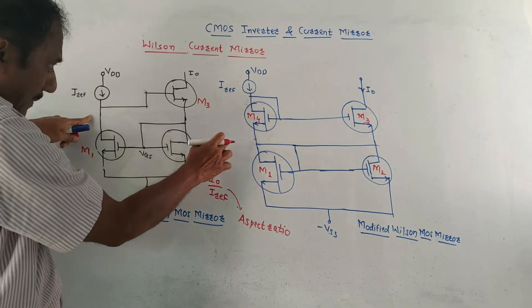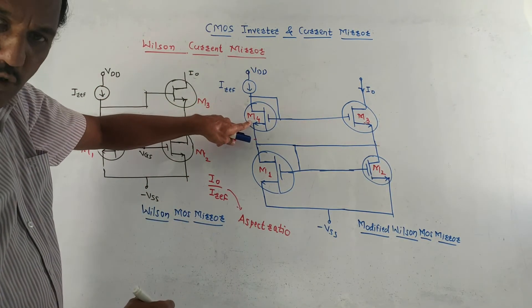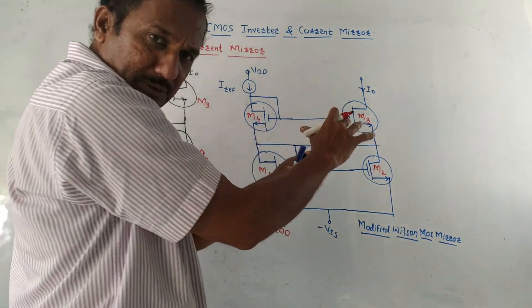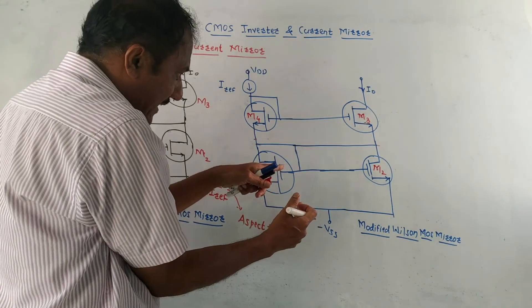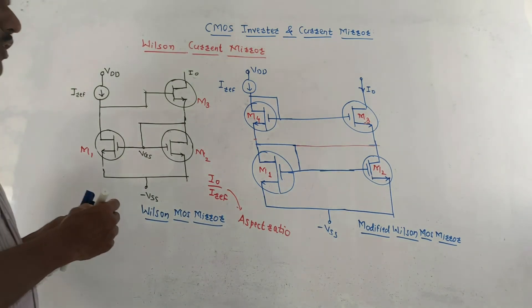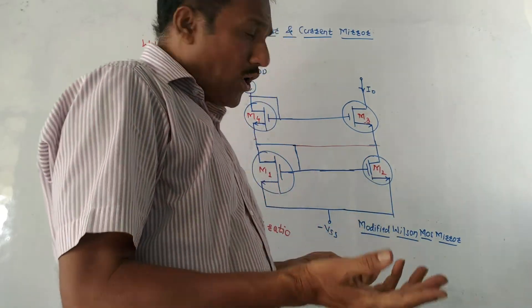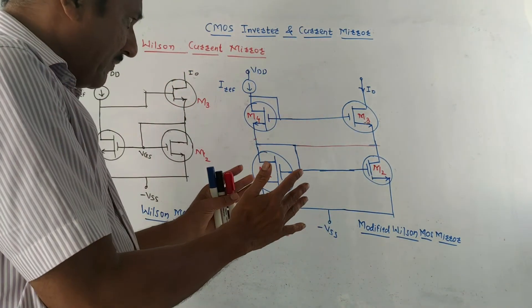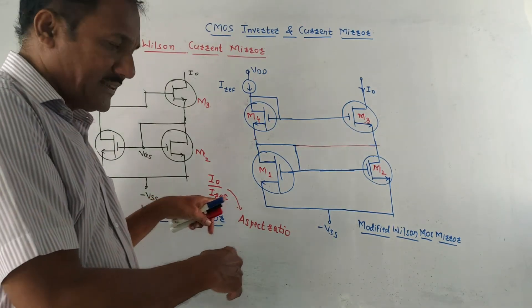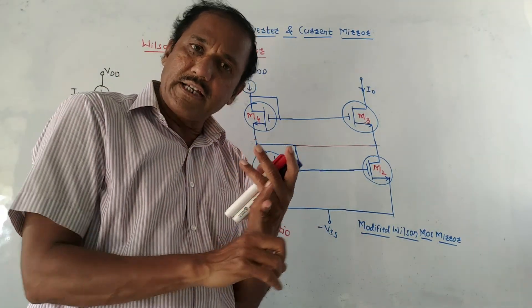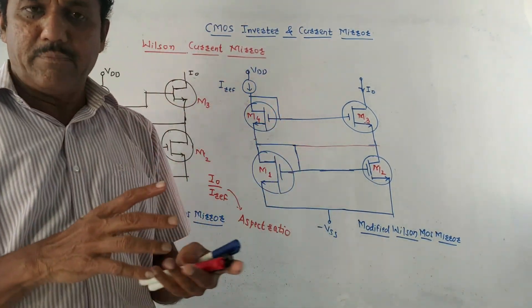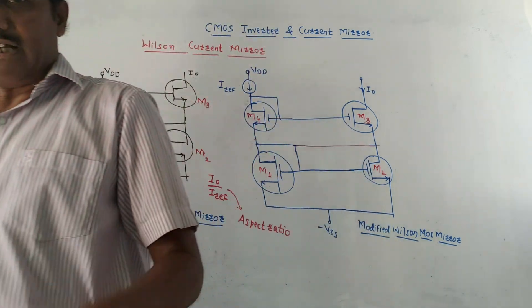To avoid this drawback and obtain circuit balancing, we use the modified Wilson MOS mirror. In this diagram, an extra MOSFET M4 is added in series with M1. The major advantage of the modified Wilson MOS mirror compared to earlier techniques is balanced current and a large value of output resistance. That's it for today's session — thank you and thanks a lot for watching this video.